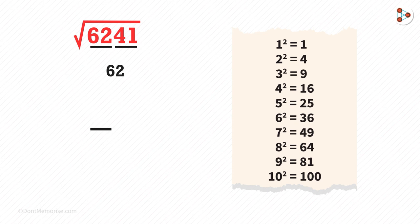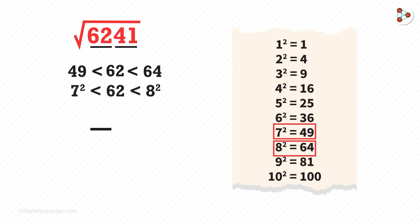This number is between which two perfect squares? Correct, 49 and 64. This means it's between 7 squared and 8 squared. The 10th digit of the answer will be the lower one among these two numbers. That's 7.